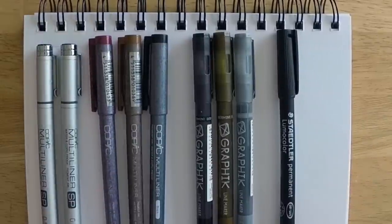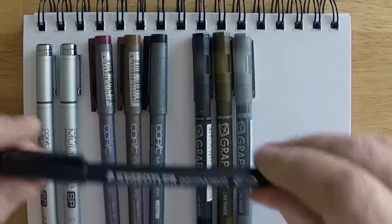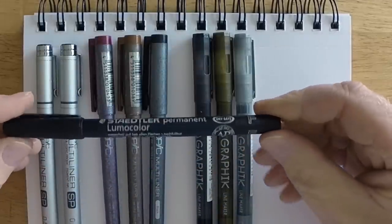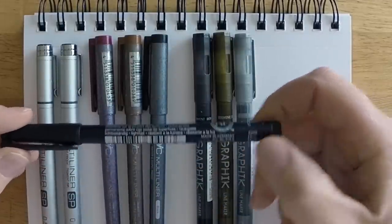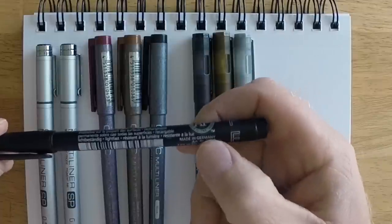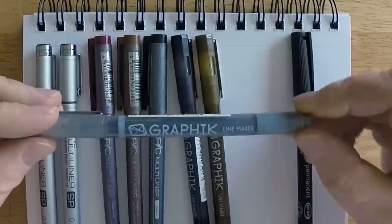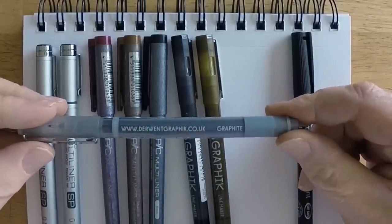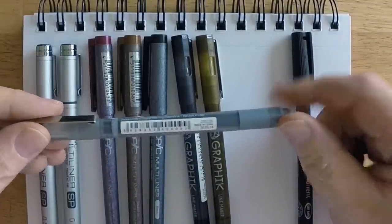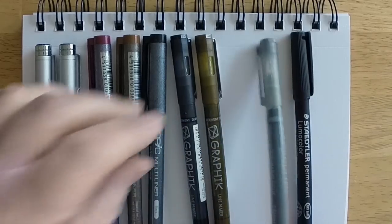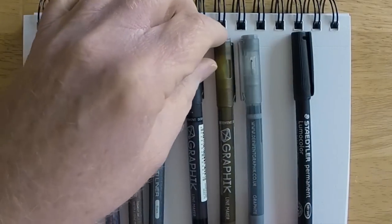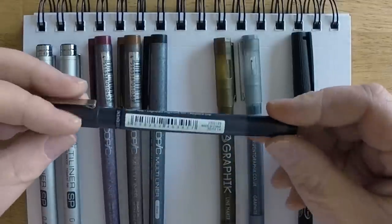Two of them are from the manufacturer Copic, a Japanese manufacturer. The Staedtler here is manufactured in Germany, and the other three, the Graphik Line Makers, are a new pen recently introduced by Derwent. These are made partially in China, but the nibs or tips are made in Japan.